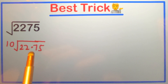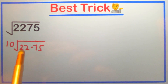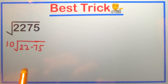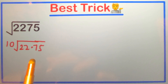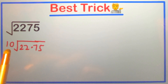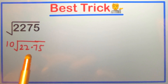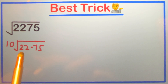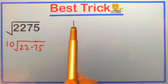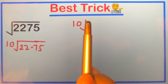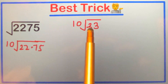In the next step we will approximate this value, because with this trick we get the approximate answer, not the exact answer. If you calculate with a calculator you may get a slightly different answer. So we do the approximation of 22.75, which we can write as 23. So what we write in place of 22.75 is 23.